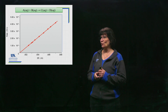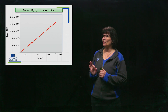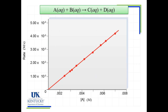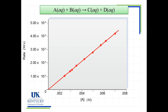Here we have a graph. Along the left-hand side is the rate of the reaction in molarity per second — this is how fast it's going — and we see it's going at different speeds depending on what concentration of A we have. We don't have to see A start here and finish there; we can look at any moment in time to see how fast the reaction is going.